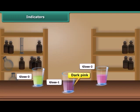What do you see? You can notice that in glass one, color changes to dark pink. Lemon juice is acidic in nature, so there is a change in the color of the indicator.